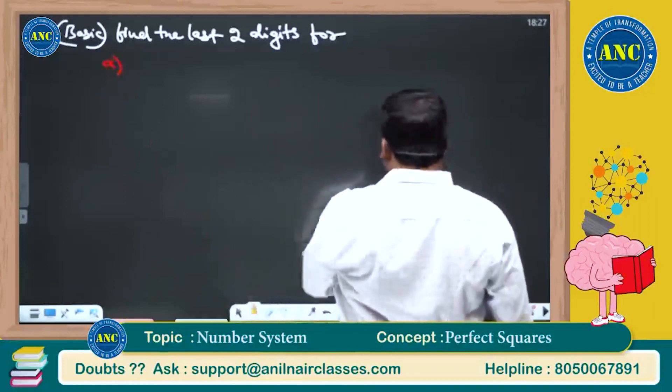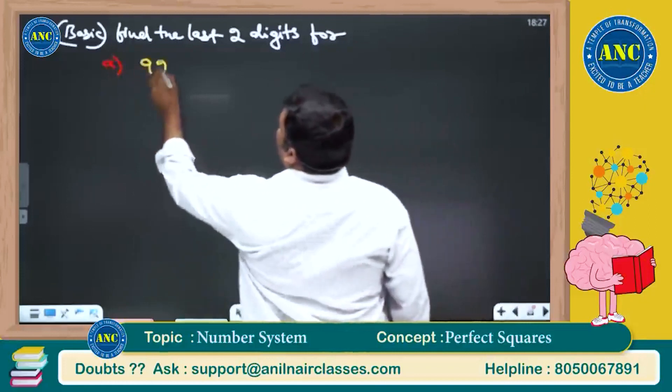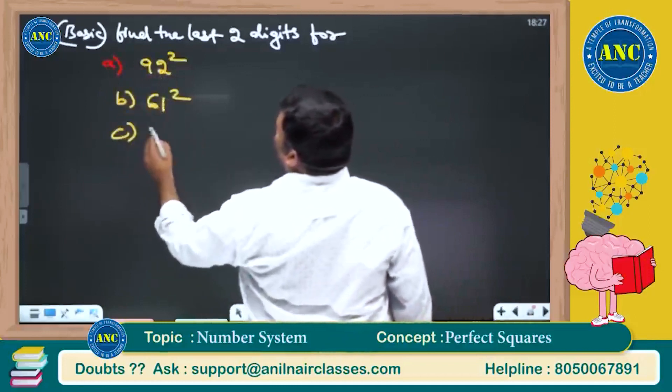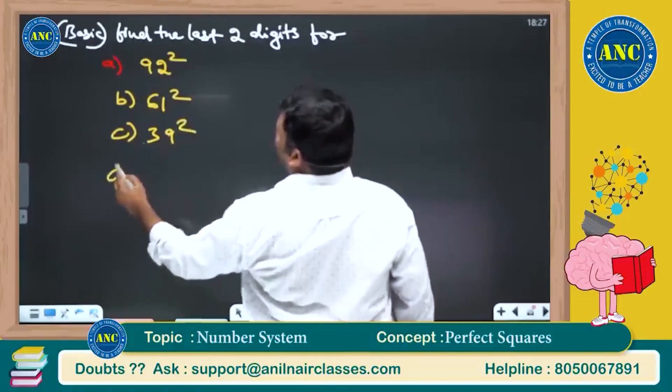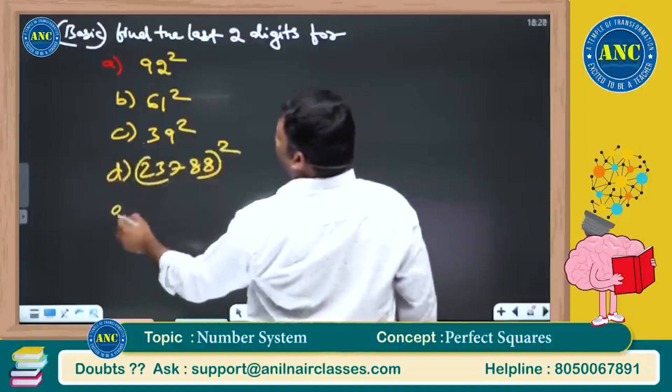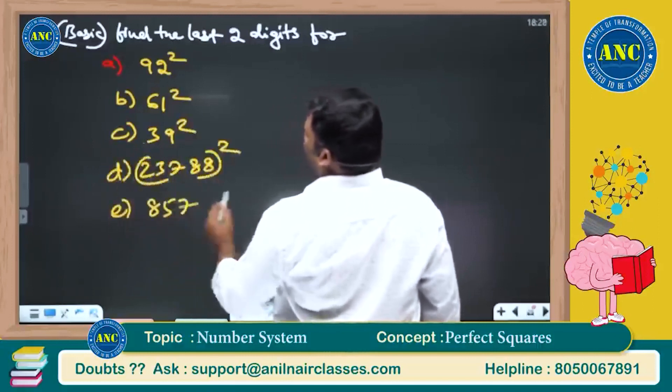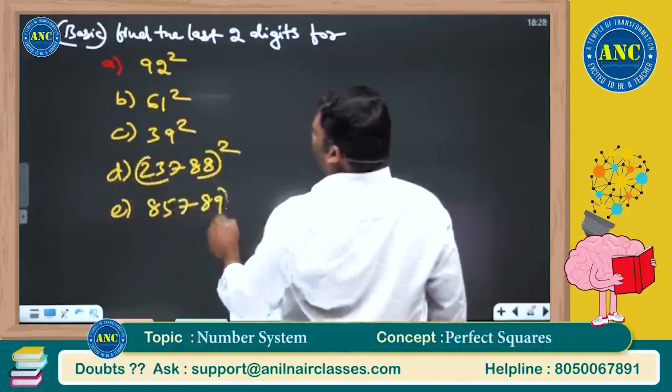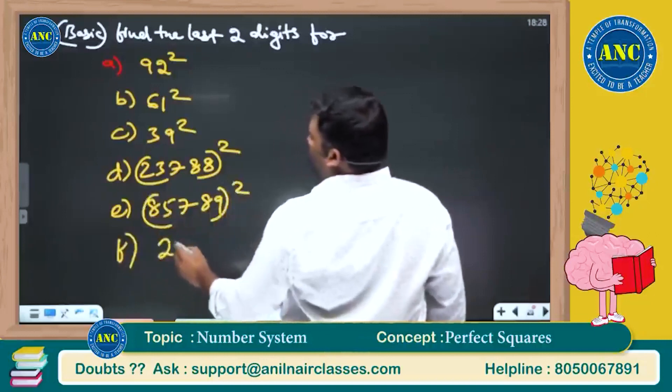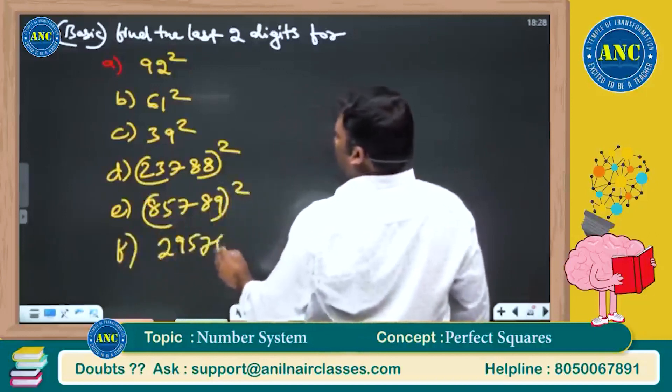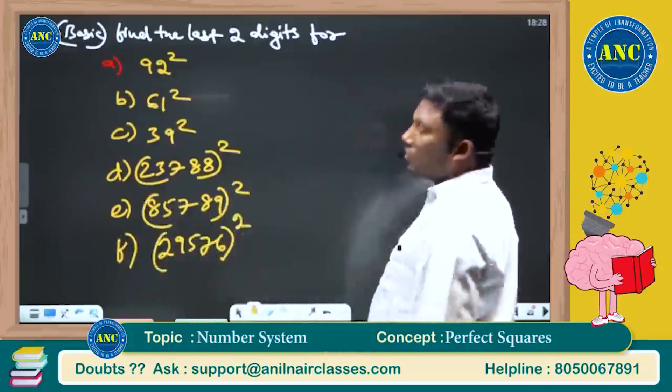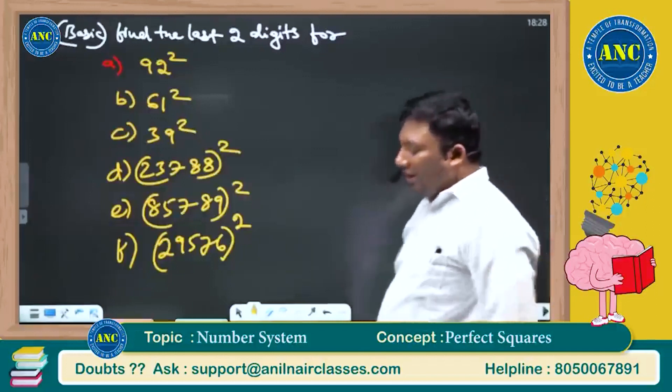First question: 92 square, 61 square, 39 square, 237, 88 square, 857, 89 square, 29576 square. First we will solve these 6 questions, then 4 questions I will take into a next level.